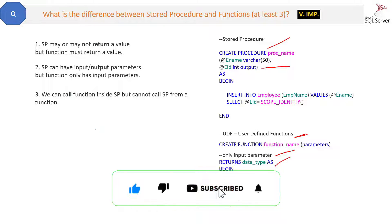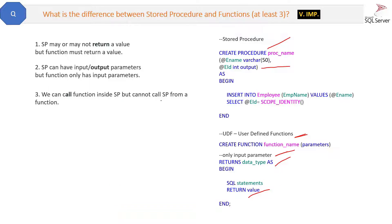The next difference is: we can call a function inside a stored procedure, but we cannot call a stored procedure from a function. Inside a stored procedure you can write something like 'SELECT function FROM...', but inside a function you cannot call a stored procedure — that is not possible.